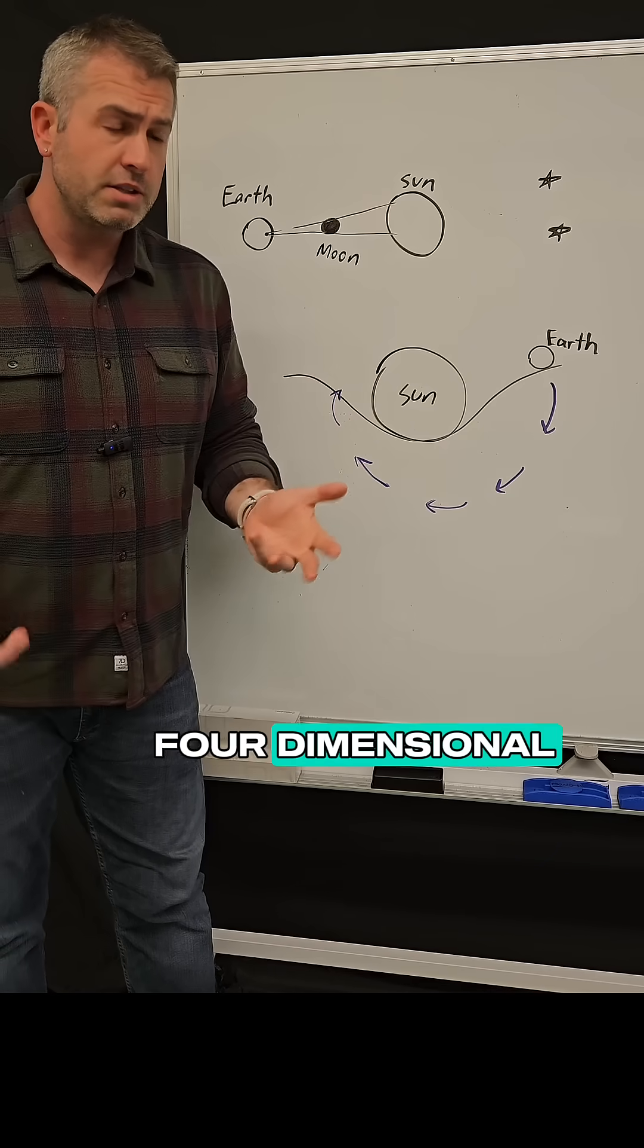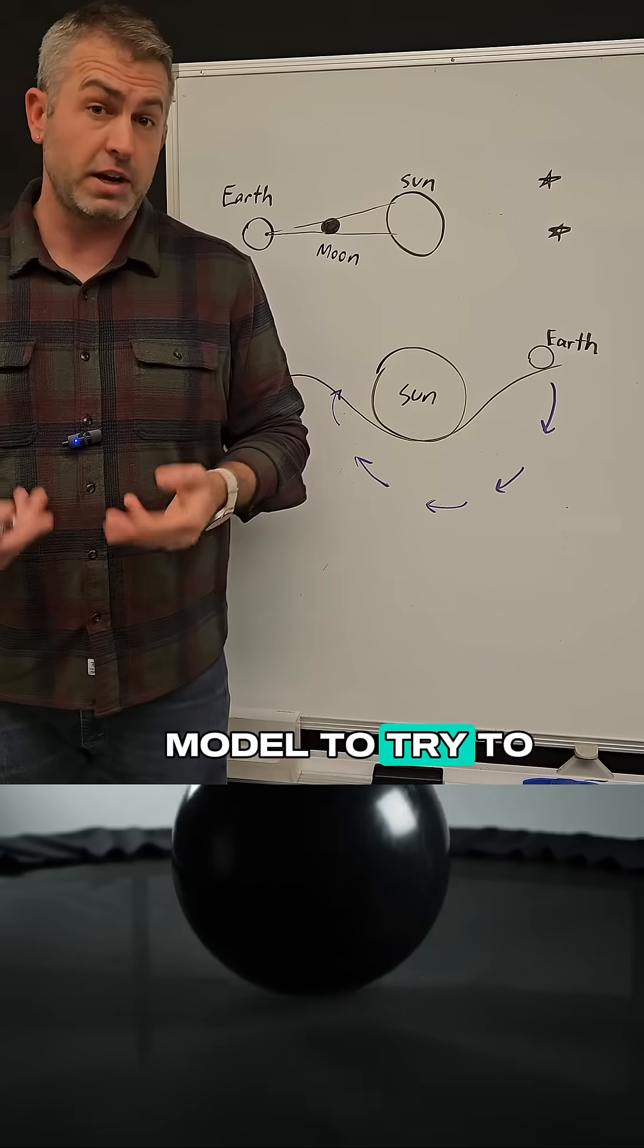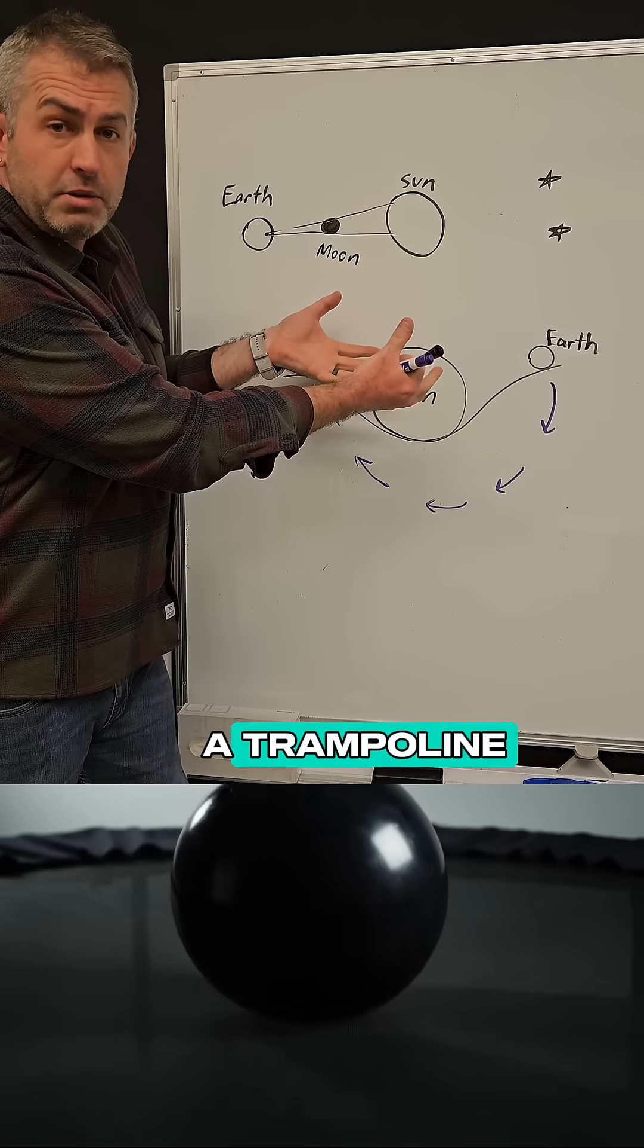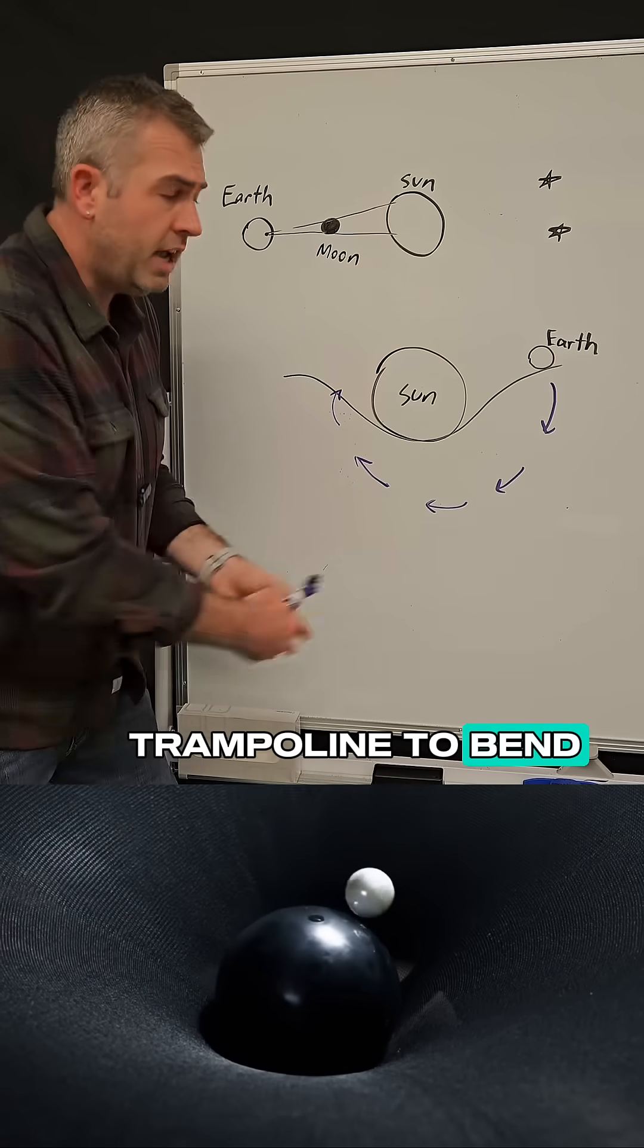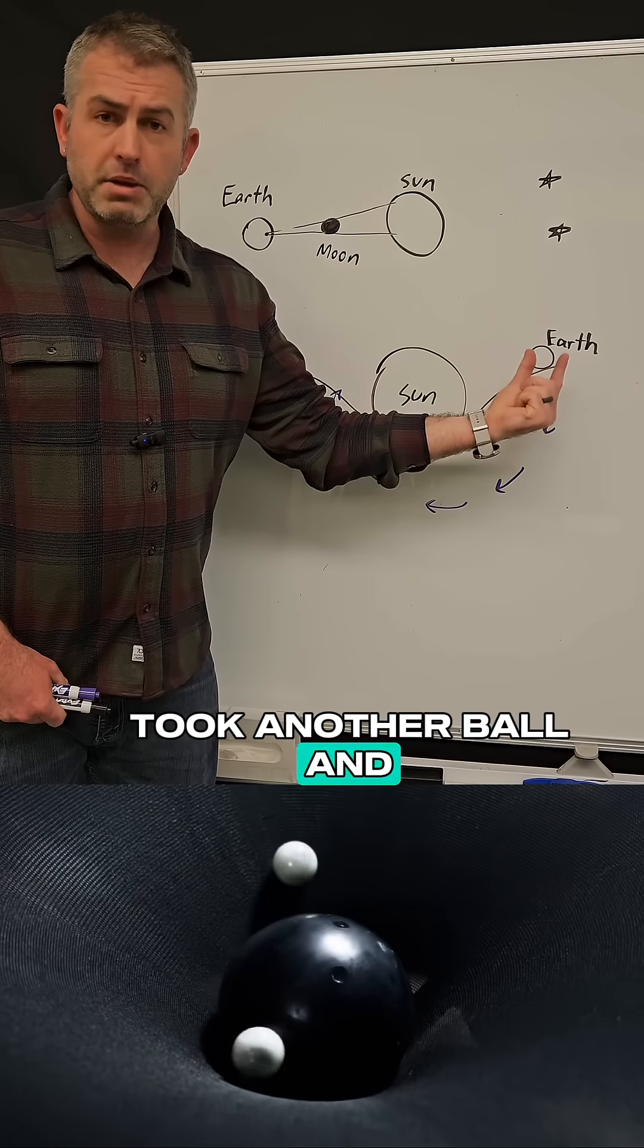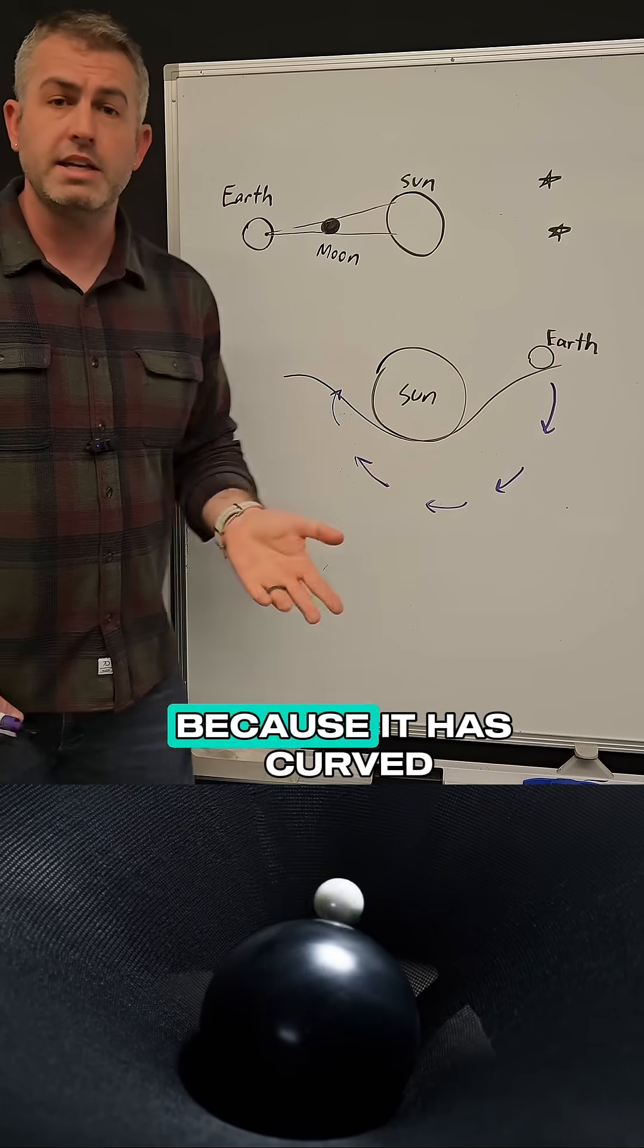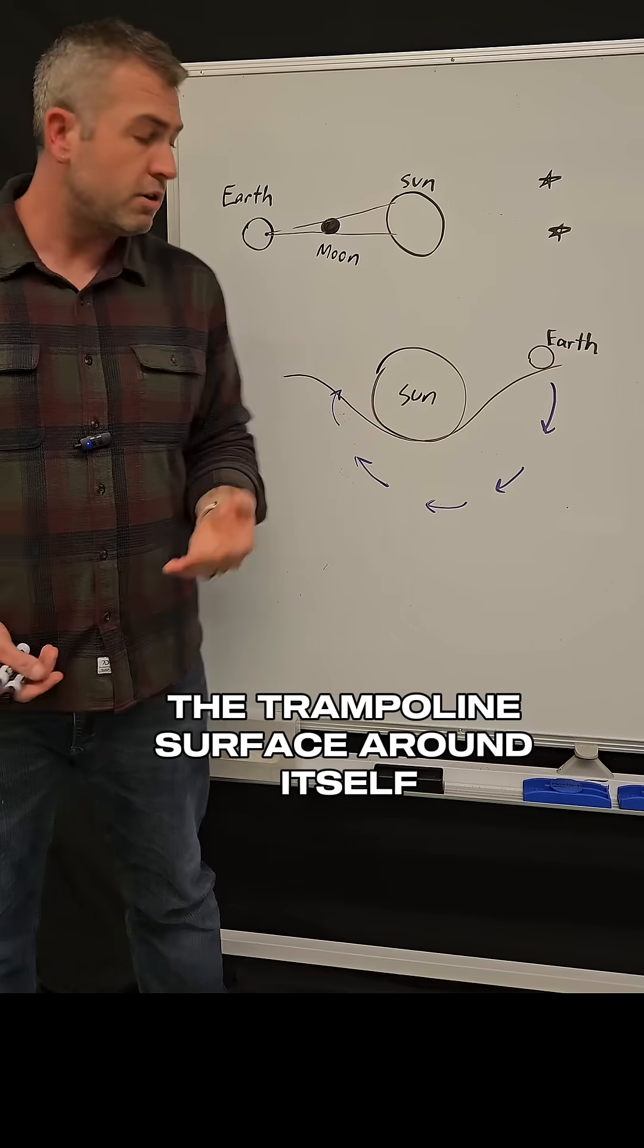Now space-time is four-dimensional so I'm going to use a two-dimensional model to try to explain it. Imagine taking a bowling ball and putting it on a trampoline and that causes the trampoline to bend. And then if you took another ball and placed it nearby, that ball would roll towards the central bowling ball because it has curved the trampoline surface around itself.